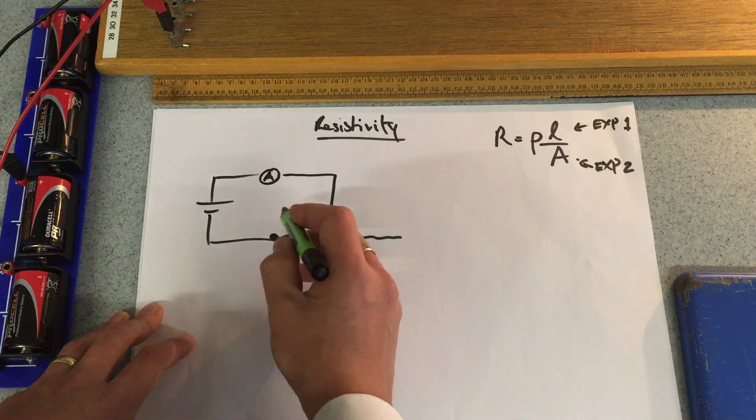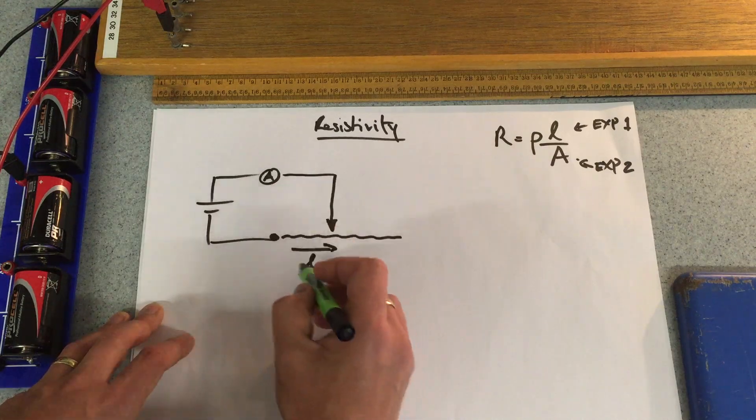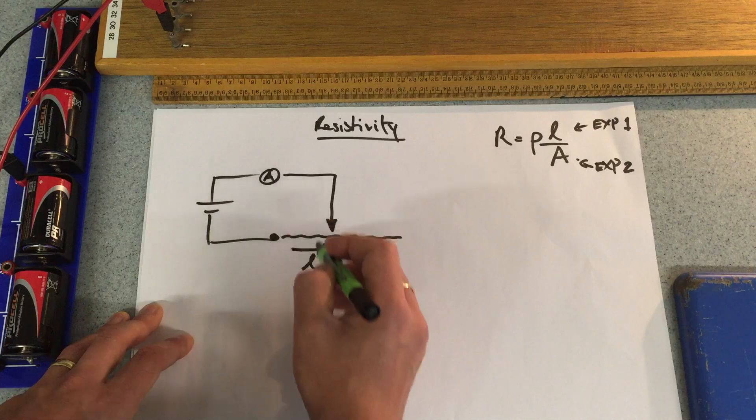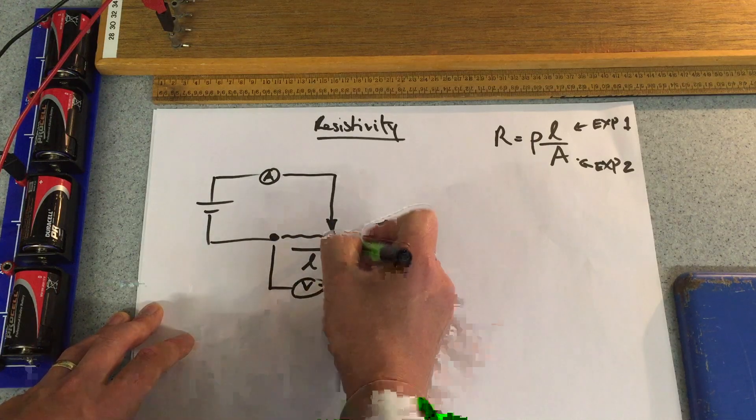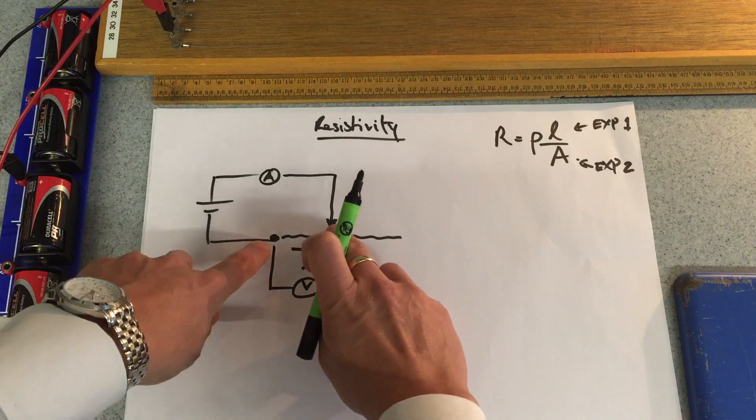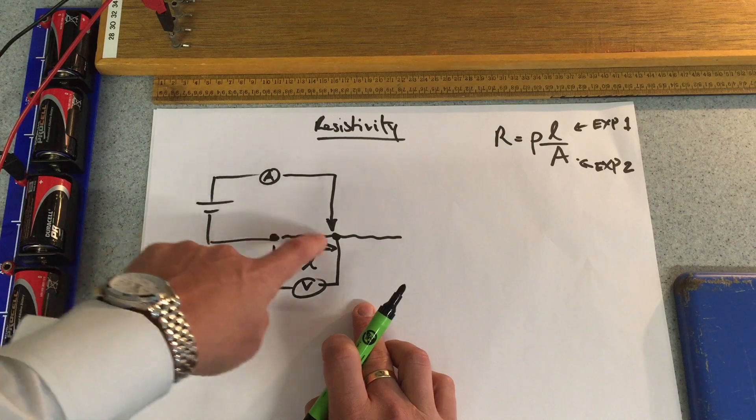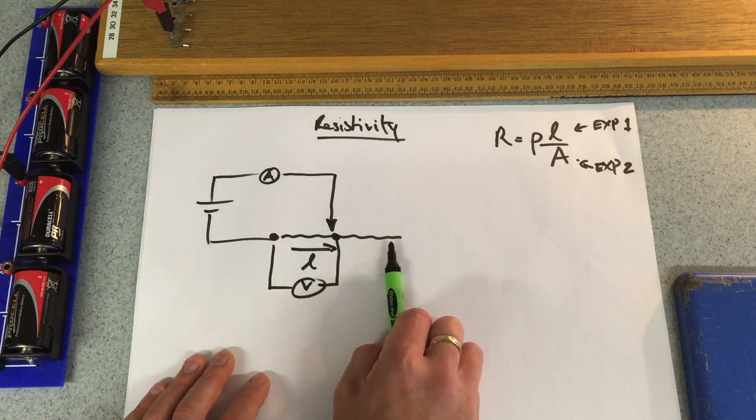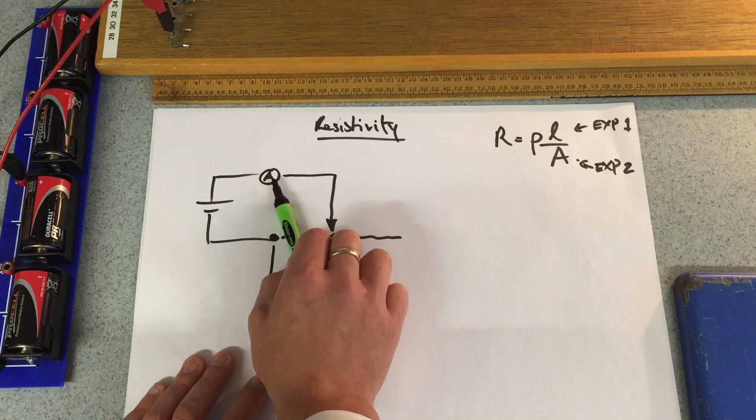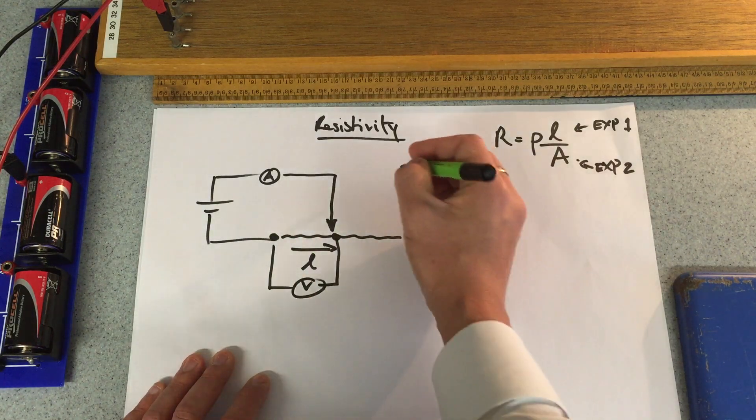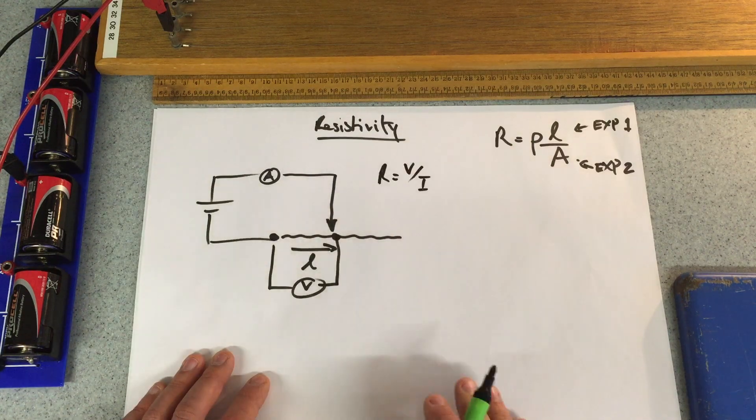As well, when we've worked out the current, we're also looking to work out the potential difference. The voltmeter is going to be attached to wherever this point is and the base of the piece of wire. As this moves along we're going to get readings for voltage and current and therefore work out the resistance in accordance with the equation: resistance is voltage divided by the current.